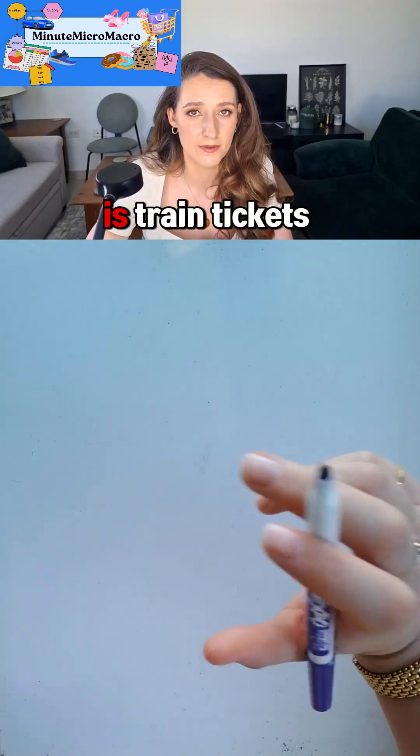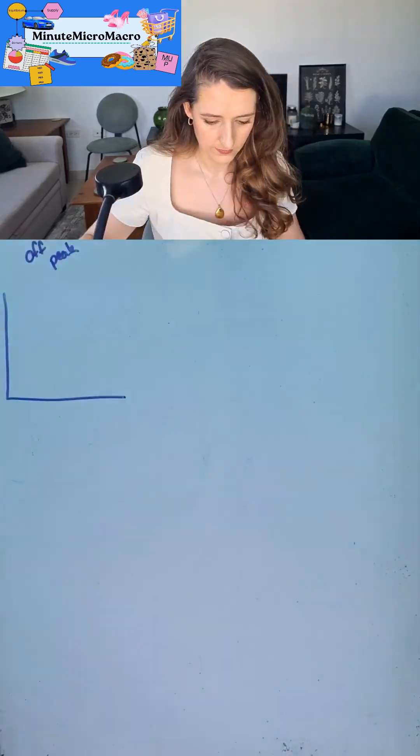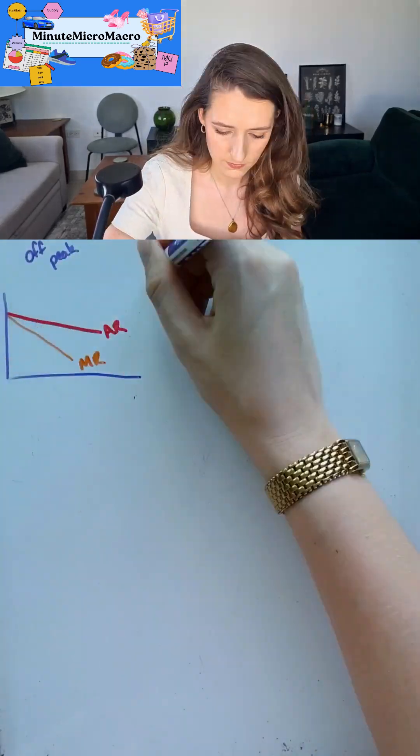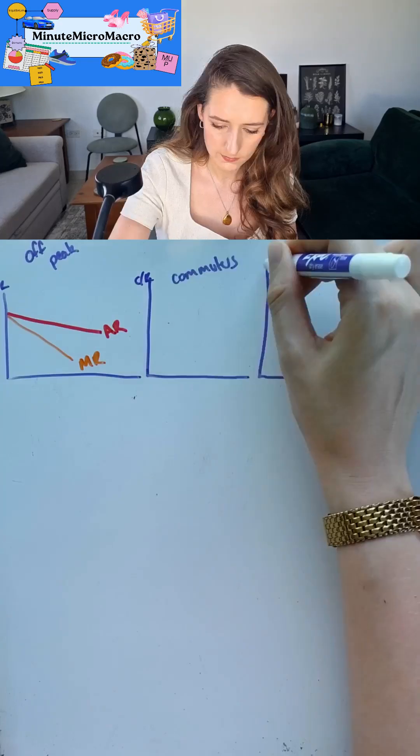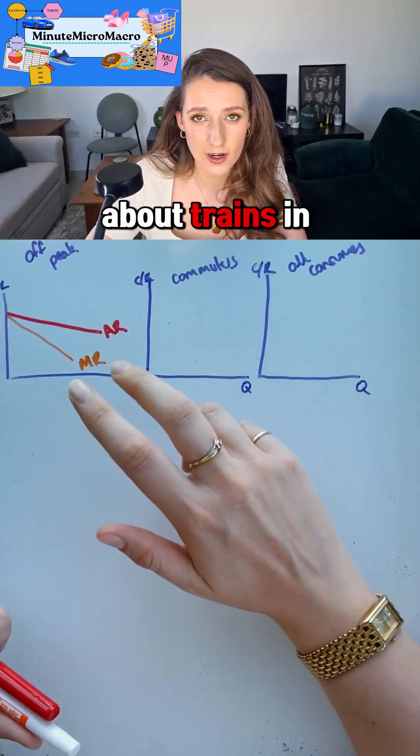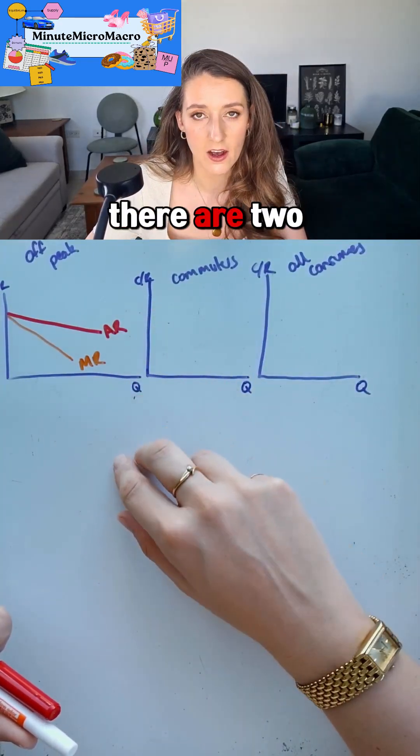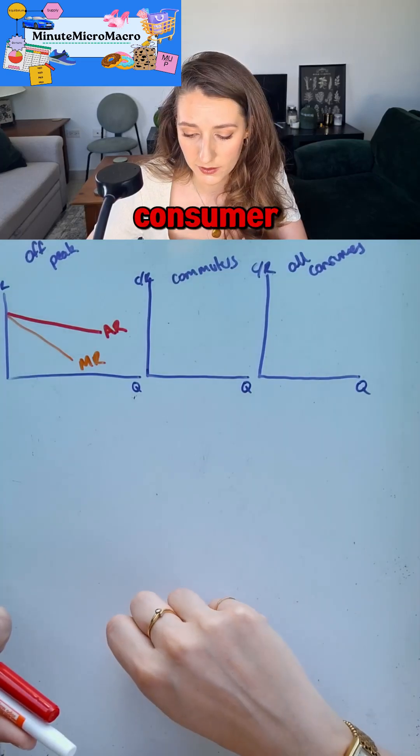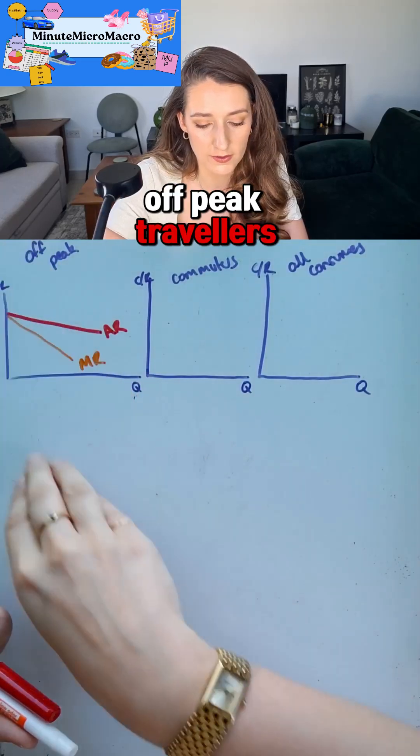A really good example of this is train tickets. If we're thinking about trains in large cities there are two different types of consumer. We can segment those consumers because there are off-peak travelers.